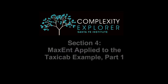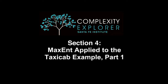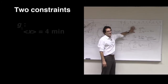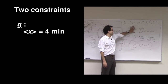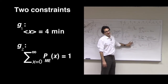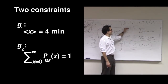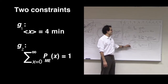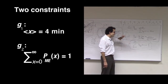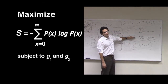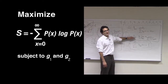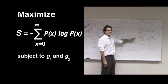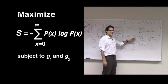Just to remind you where we are, we have two constraints. One is that the expectation value of x, the average waiting time, is 4 minutes. The other is that the probability sums to 1. Those are our two constraints. And then what we're going to do is maximize the entropy of the distribution subject to those constraints.